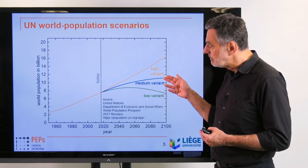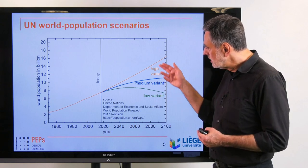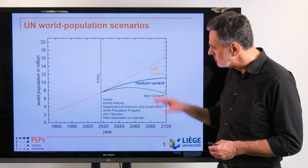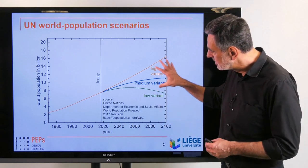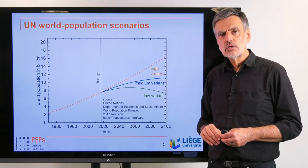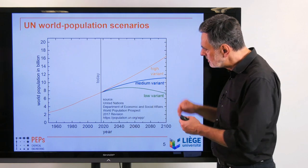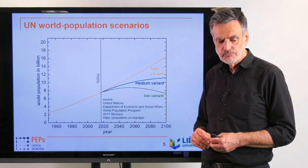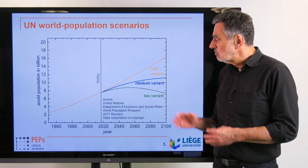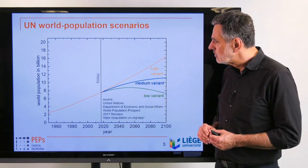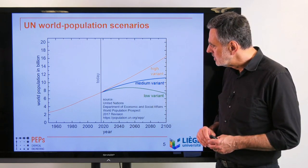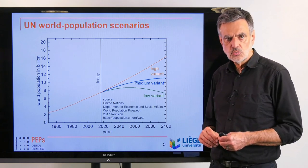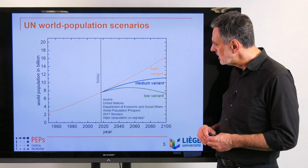The key variable in the entire system is world population. Population defines everything: the more people we are, the more food we need, the more energy we need, the more waste we produce, the more CO2 we emit into the atmosphere. So world population is a key variable in this entire system.